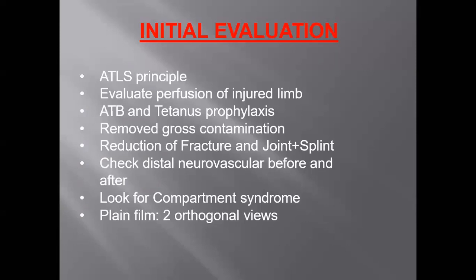We have to remove gross contamination, then give a wound wash. The recommended irrigant for wound wash is normal saline. For grade 1 Gustilo-Anderson open fractures, we have to use 3 liters of normal saline. For grade 2, 6 liters. For grade 3, it is 9 liters.